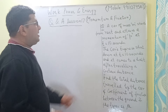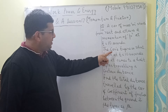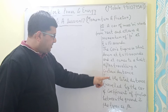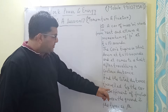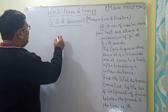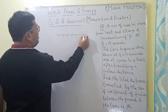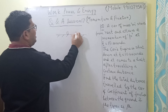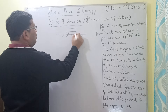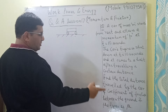A car of mass M starts from rest and attains a momentum of P at t equal to 10 seconds. The car's engine is shut down at t equal to 10 seconds and it comes to a halt after traveling a certain distance. We have to find the total distance traveled by the car if the coefficient of friction between the ground and the tires is mu.